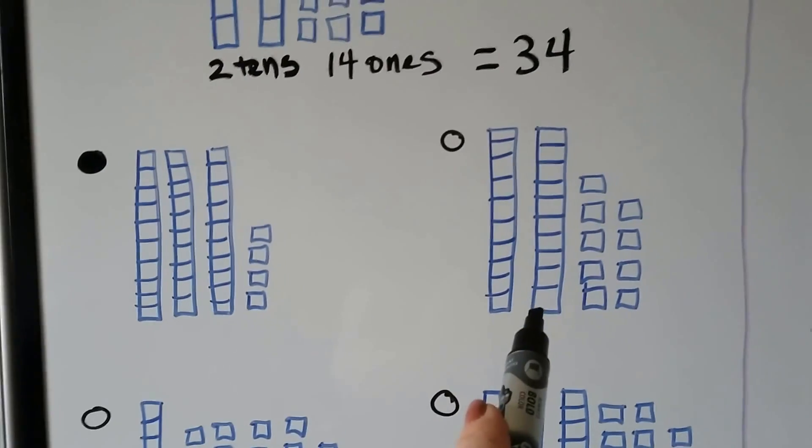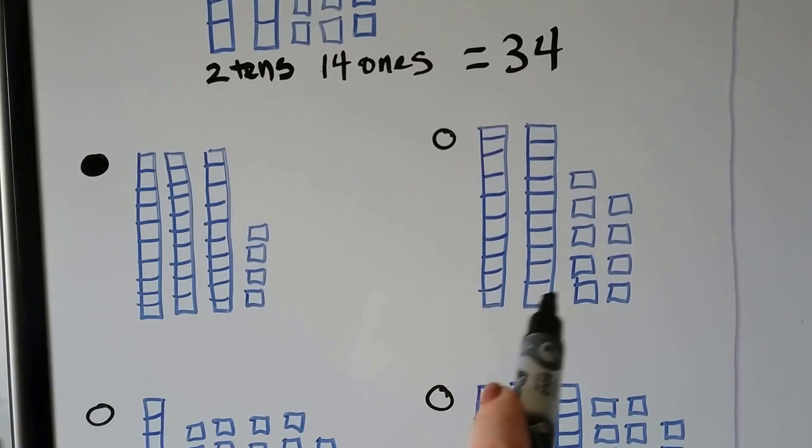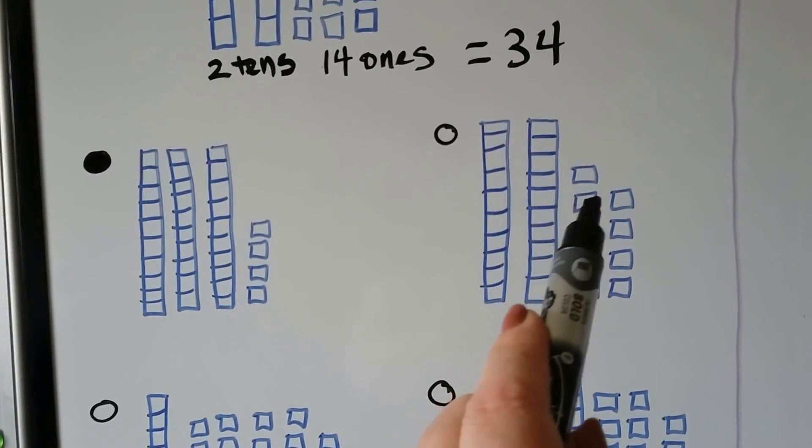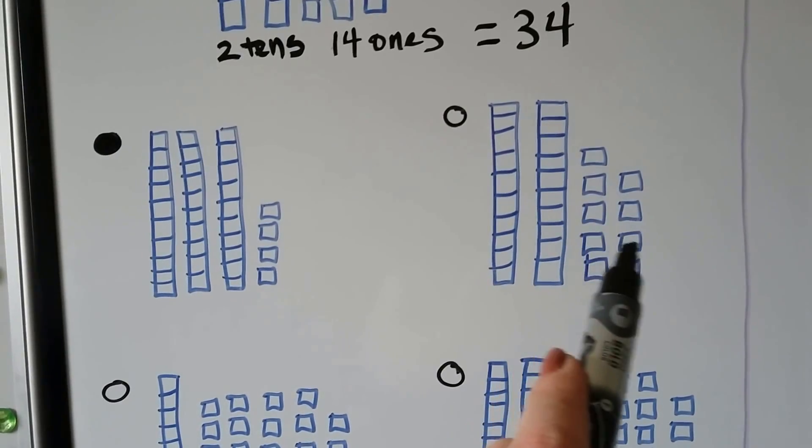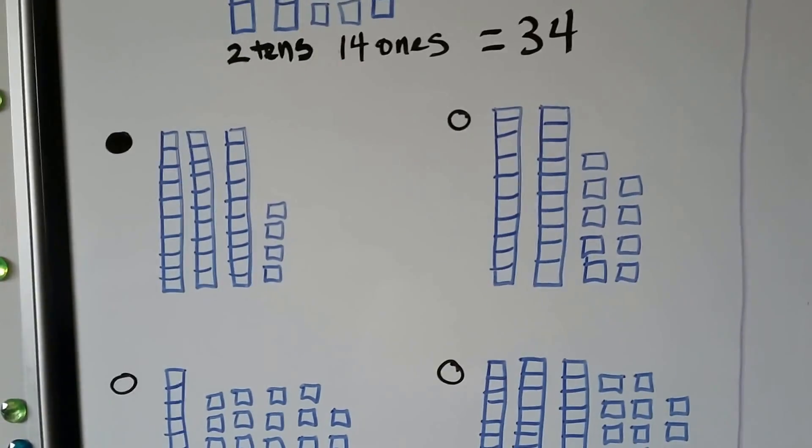Does this one show 34? We have two tens. So that's 20. 21, 22, 23, 24, 25, 26, 27, 28, 29. No. That's not 34.